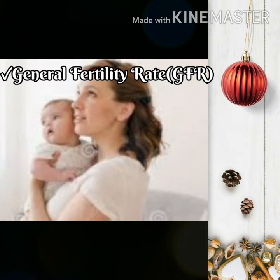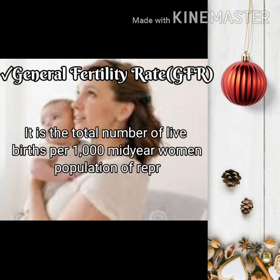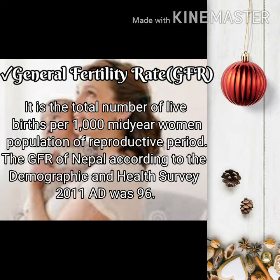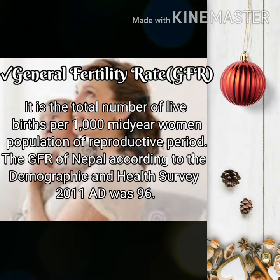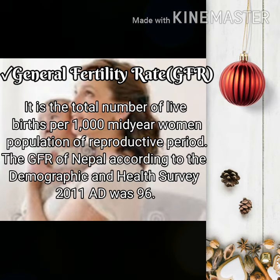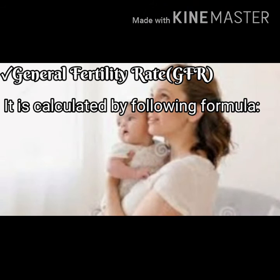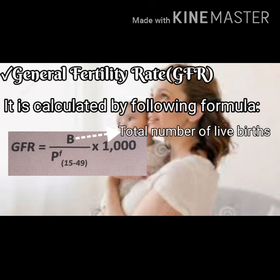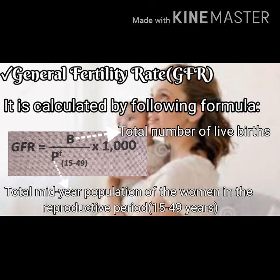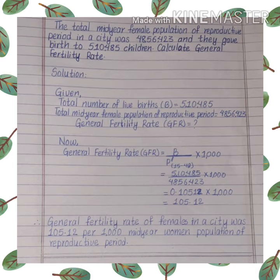The General Fertility Rate (GFR) is the total number of live births per thousand mid-year woman population. The GFR of Nepal according to the Demographic and Health Survey 2011 was 96. It is calculated by dividing the total number of live births by the mid-year population of women in the reproductive period and multiplying by thousand.